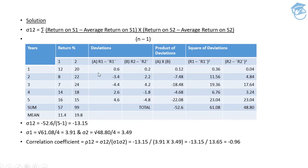Now I subtract the average return from each year's return. For security one: 12 minus 11.4 gives 0.6; 8 minus 11.4 gives -3.4; 7 minus 11.4 gives -4.4; 14 minus 11.4 gives 2.6; and 16 minus 11.4 gives 4.6. For security two the deviations are: 0.2, 2.2, 4.2, -1.8, and -4.8. To obtain the product of deviations, multiply the corresponding pairs. 0.6 multiplied by 0.2 gives 0.12.